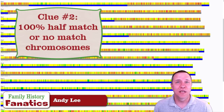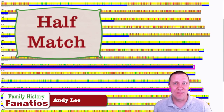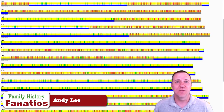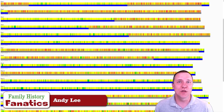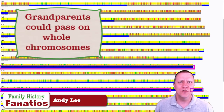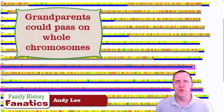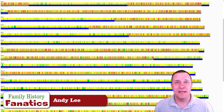The second thing to look for is chromosomes that are either 100% no match — meaning all gray — or 100% half match — meaning all blue. With parents and identical twins, all chromosomes were 100% match. Well, grandparents can pass on chromosomes to their grandkids if there was no recombination event, and this happens in one, two, or three — sometimes as many as 10 or 12 — chromosomes depending on how many recombinations occurred.